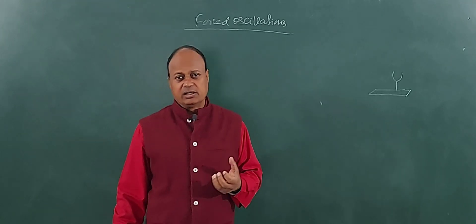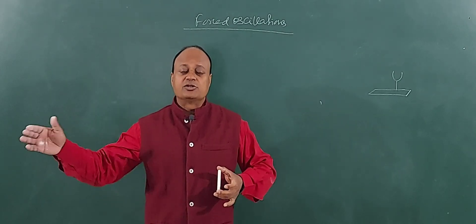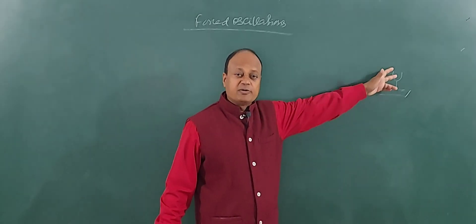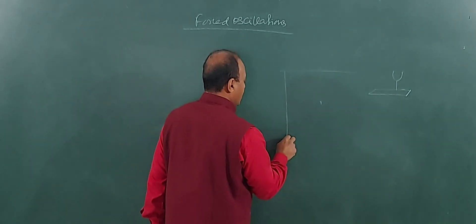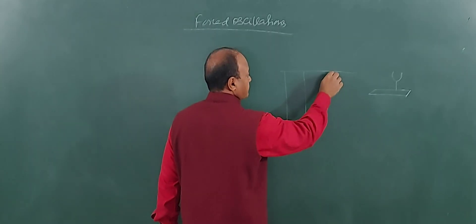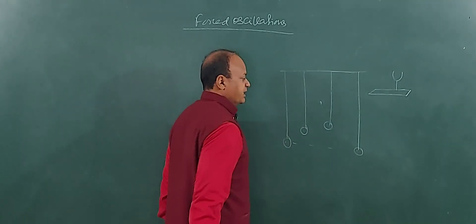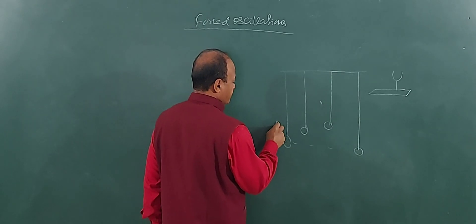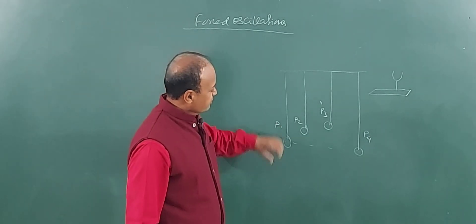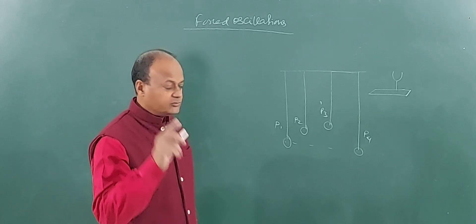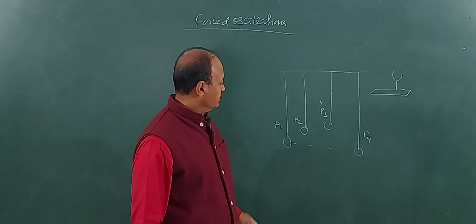All these things are pointing out towards one thing: an external object which is vibrating is setting another object into vibration. The vibration of the table is caused by the vibrating tuning fork. Another example: take a rope and tie many bobs of varying lengths — pendulum 1, pendulum 2, pendulum 3, and pendulum 4. If you set one of the pendulums in motion, say P1, all of these pendulums will also start vibrating.